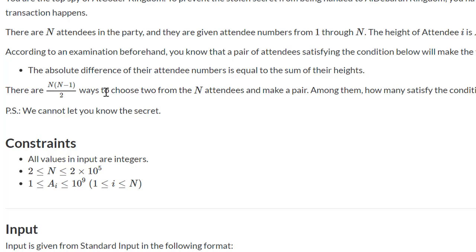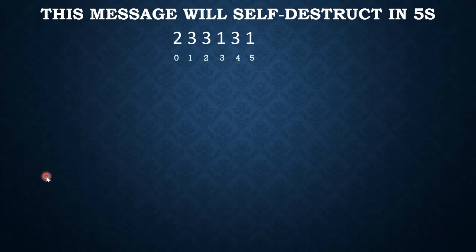We have a problem here because we cannot actually select every possible pair and check if it satisfies the condition — that would be an O(n²) approach. We need to optimize this a little bit. This problem is interesting because it turns out you can simplify the problem, and we are going to see how.